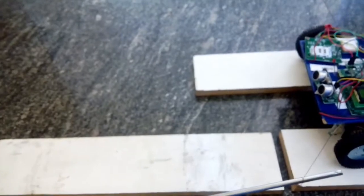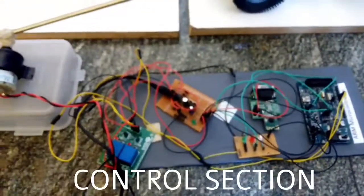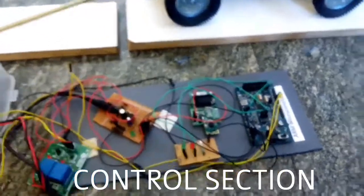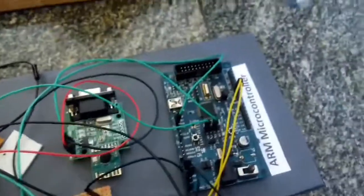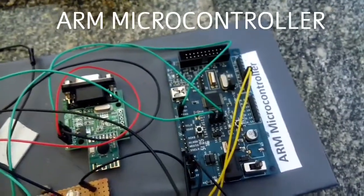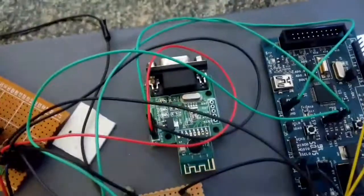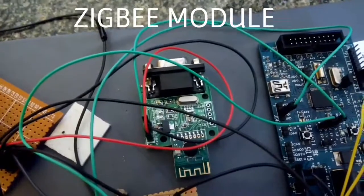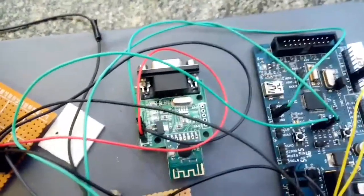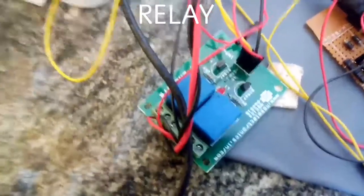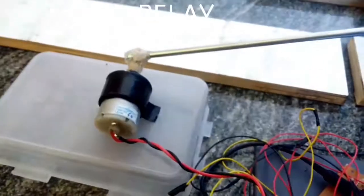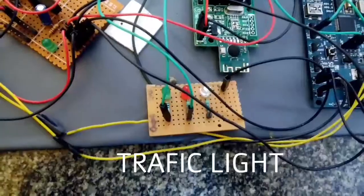Now let's see the components used in control section. Here too we are using ARM microcontroller LPC2148, ZigBee which is used to communicate with robot section, relay which drives DC motor, and a traffic light.